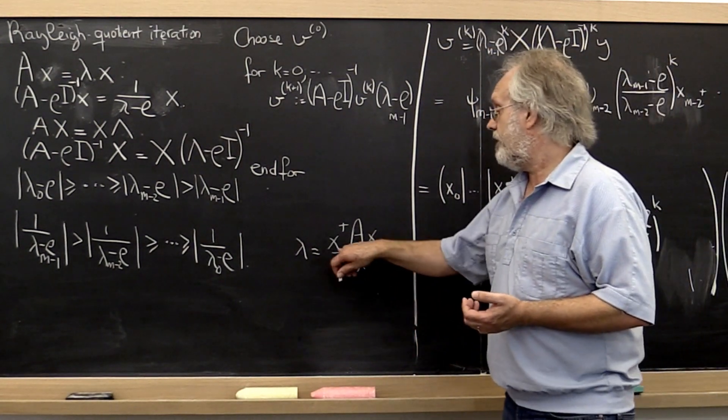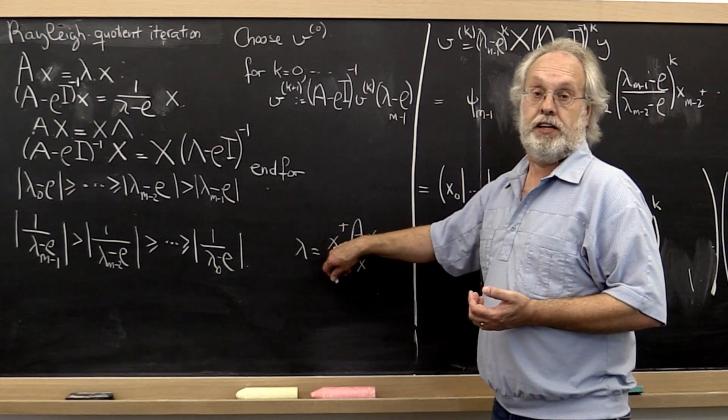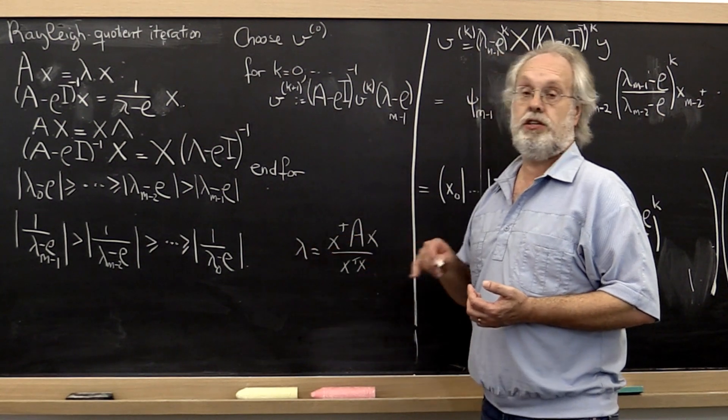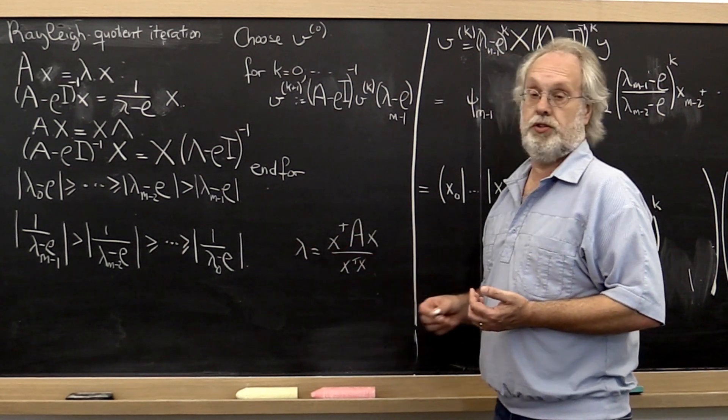Now if we have an approximation for the vector x, then this yields an approximation for the eigenvalue. This is known as the Rayleigh quotient.